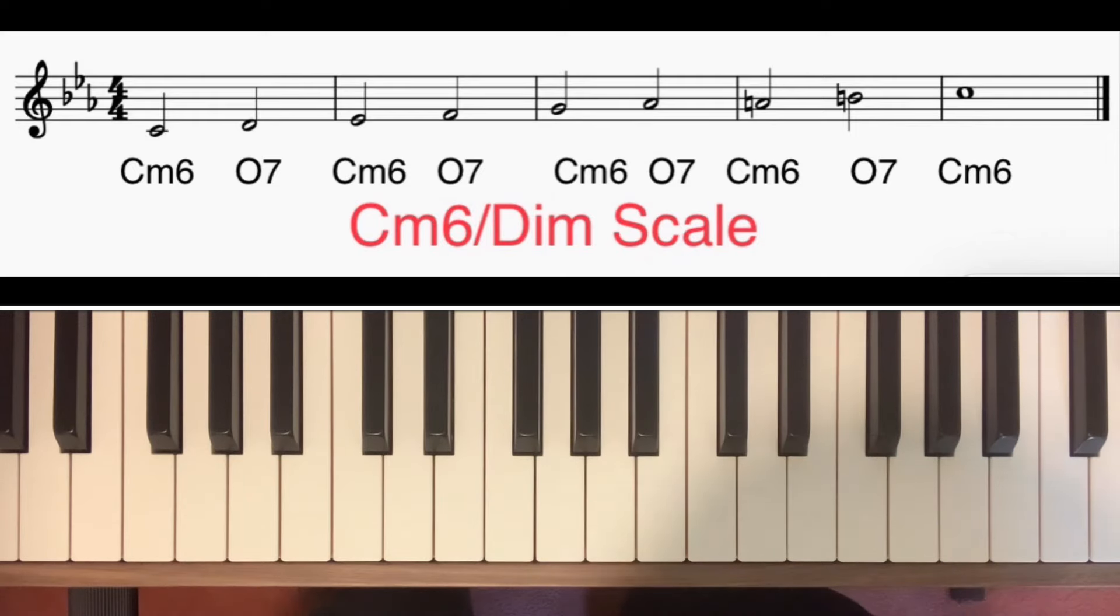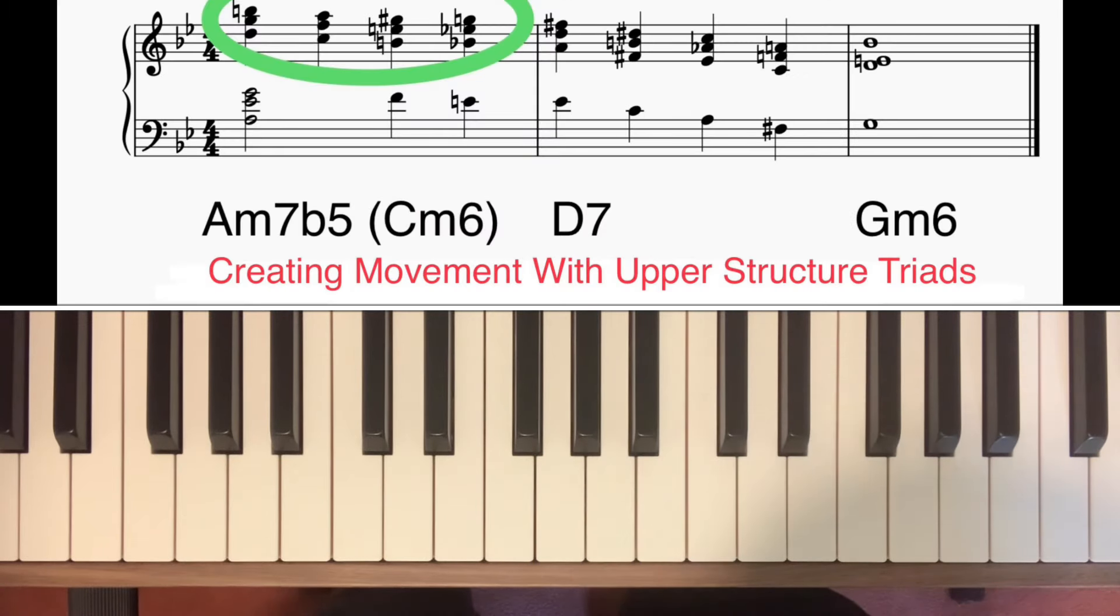In the intro I was playing over a 2-5-1 chord progression in the key of G minor. Remember in a minor key chord 2 is a minor 7 flat 5. So let's look at what I played over A minor 7 flat 5.